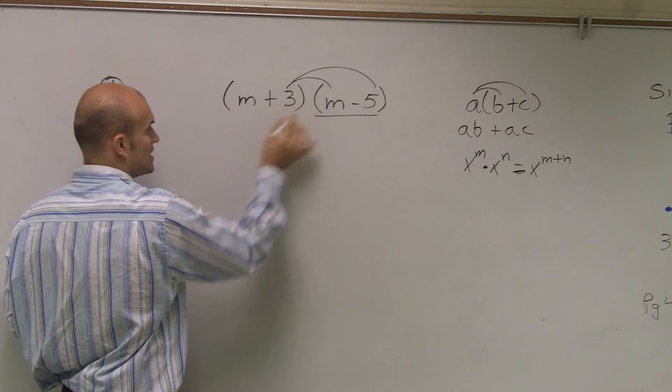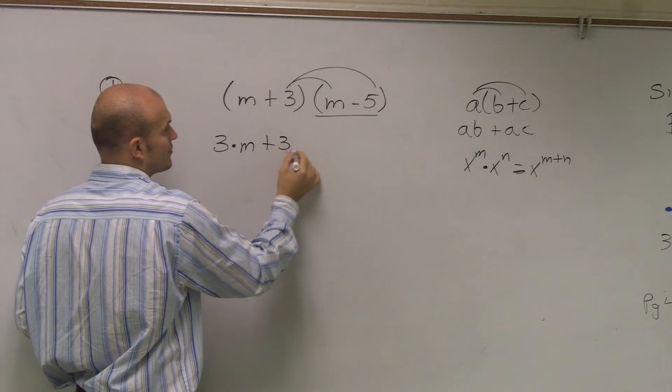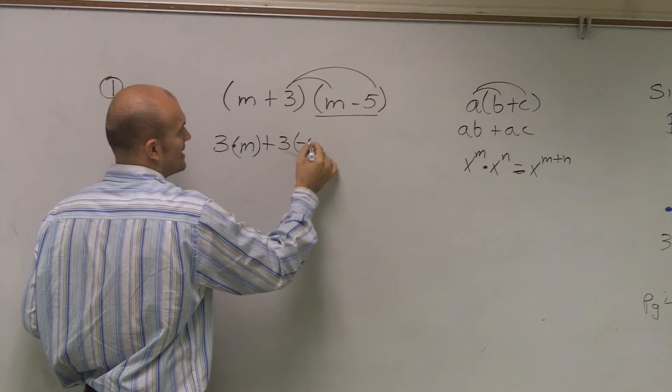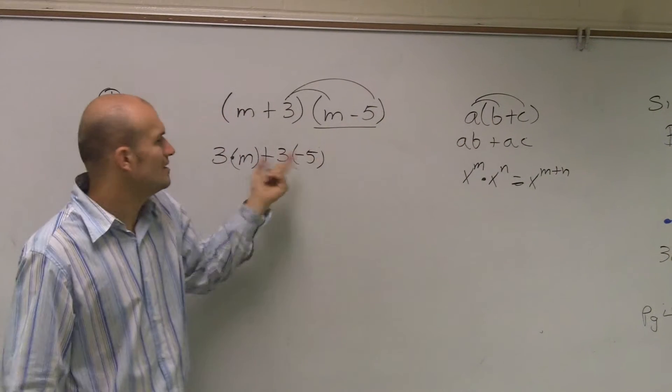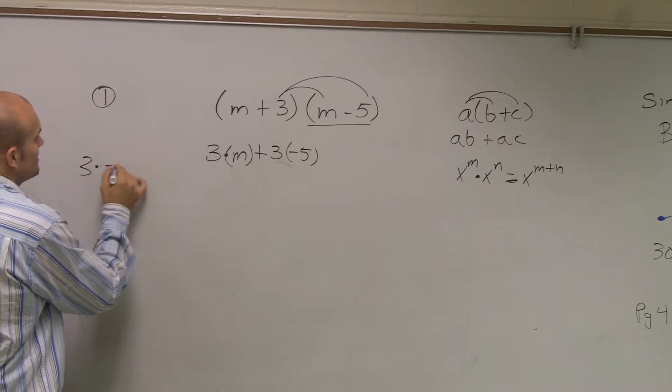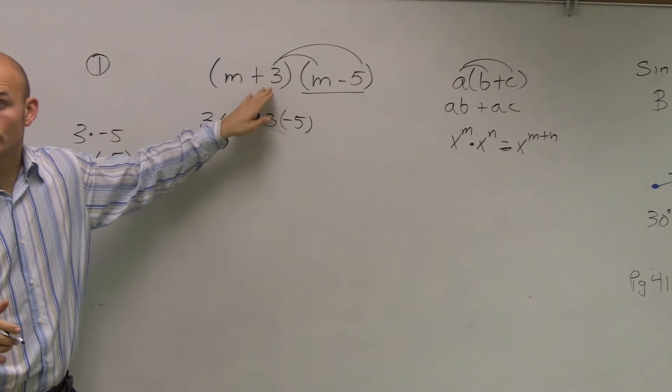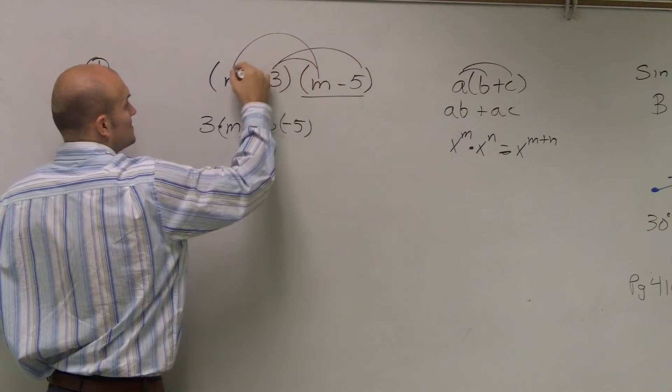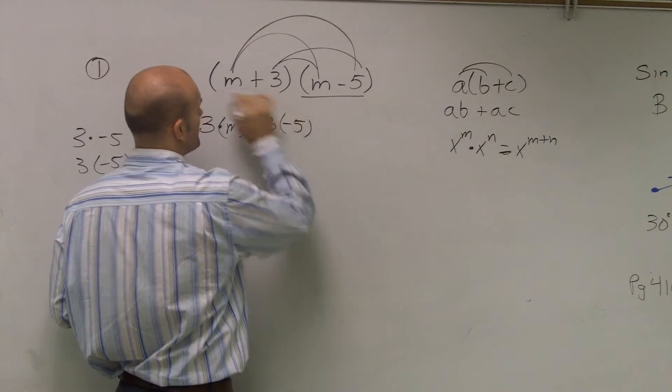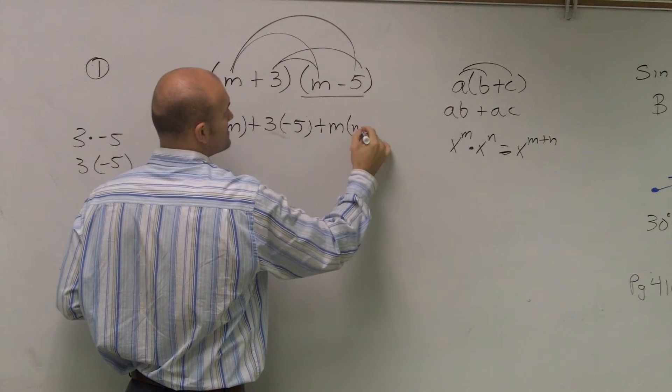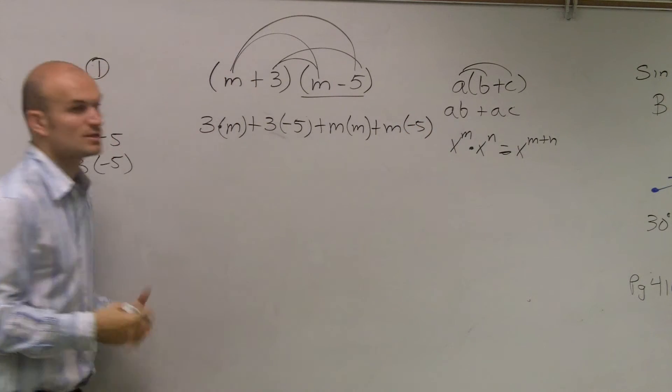So I can say the first one, M times M, and then that's a positive three, so plus three times, I'll put this in parentheses, times a negative five. Make sense? I just followed this rule. Instead of saying three times negative five, I'd just rather write it like this. Same thing. Now, you need to do that for the other one. M times M. So now you need to do M times both of them. So then I just do, that's a positive M, so M times M, and then M times negative five.